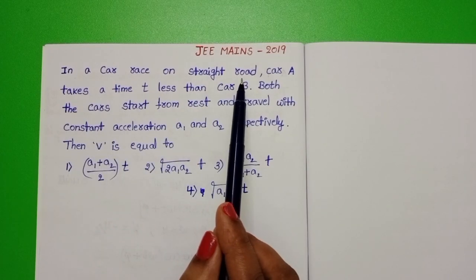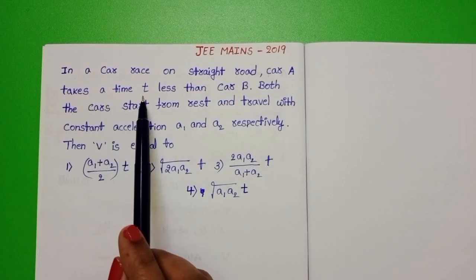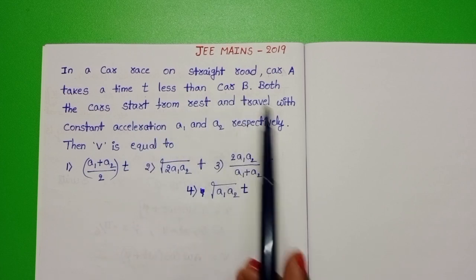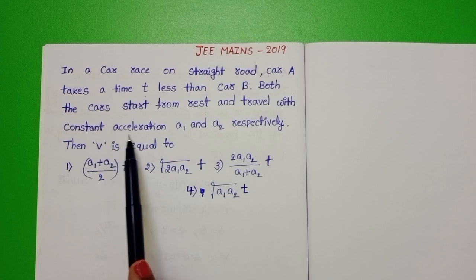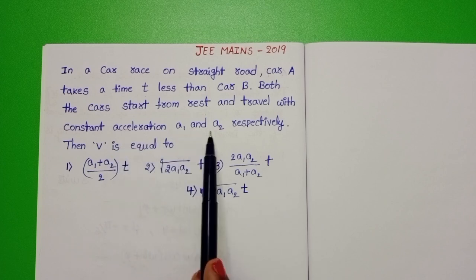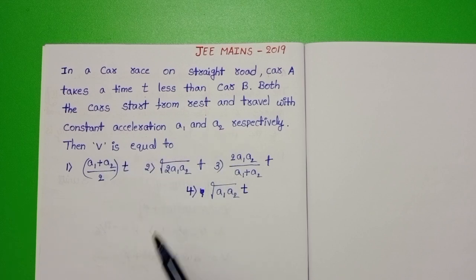In a car race on a straight road, car A takes a time T less than car B. Both cars start from rest and travel with constant accelerations A1 and A2 respectively. Then V is equal to.